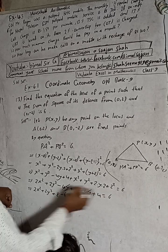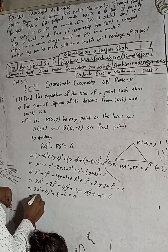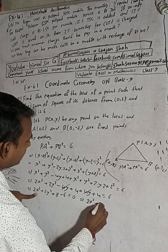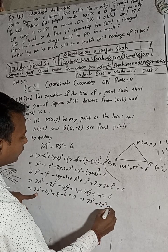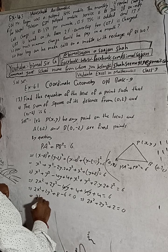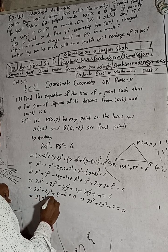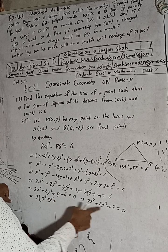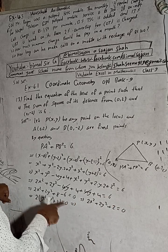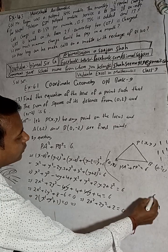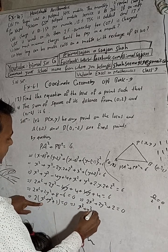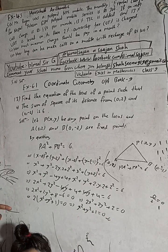Taking 2 as common factor: 2(x² + y² + 1) = 0. Dividing both sides by 2 gives x² + y² + 1 = 0.